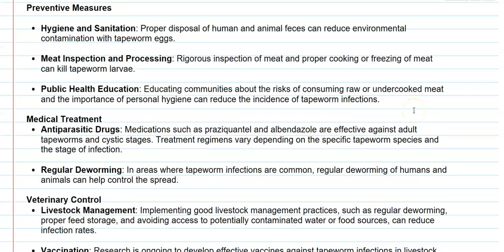Medical treatment can also control tapeworm infections. Anti-parasitic drugs such as Praziquantel and Albendazole are effective medications. Albendazole is commonly given as tablets, even in schools, mainly to control worm infections in children. These drugs are effective against adult tapeworms as well as the cystic stages. The treatment regimen and period depend upon the type of tapeworm species involved and the stage of infection. Regular deworming in areas endemic for tapeworm infections will greatly reduce infections, and deworming of both humans and animals can lower the spread and control the movement of this pathogen in the environment.